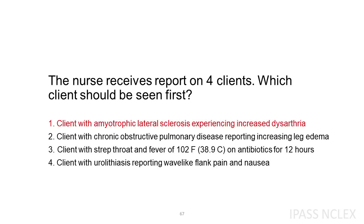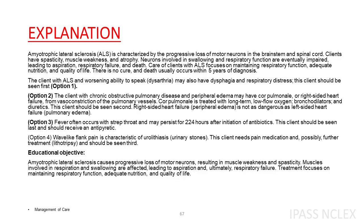Correct answer. Amyotrophic lateral sclerosis, ALS, is characterized by the progressive loss of motor neurons in the brainstem and spinal cord. Clients have spasticity, muscle weakness, and atrophy. Neurons involved in swallowing and respiratory function are eventually impaired, leading to aspiration, respiratory failure, and death. Care of clients with ALS focuses on maintaining respiratory function, adequate nutrition, and quality of life. The client with ALS and worsening ability to speak, dysarthria, may also have dysphagia and respiratory distress. This client should be seen first, option 1.